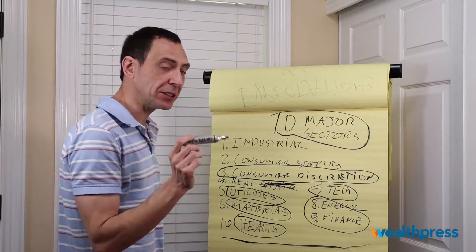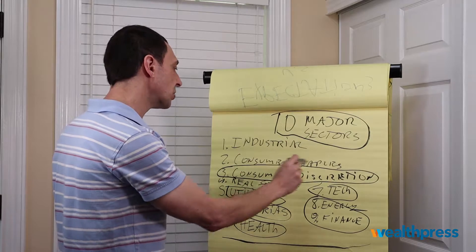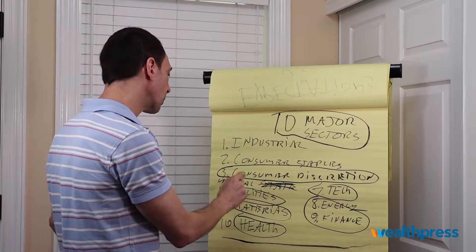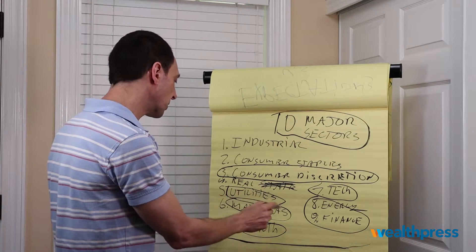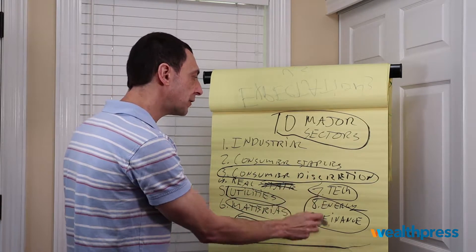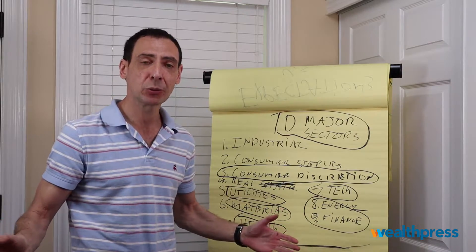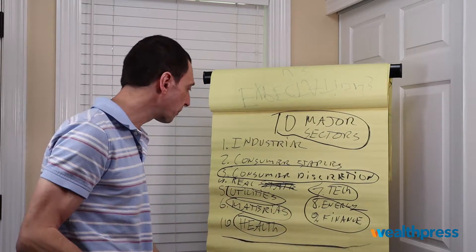So we have our 10 major sectors: industrial, consumer staples, consumer discretionary, real estate, utilities, materials, health, tech, energies, finance. Which ones are leading, which ones are following?